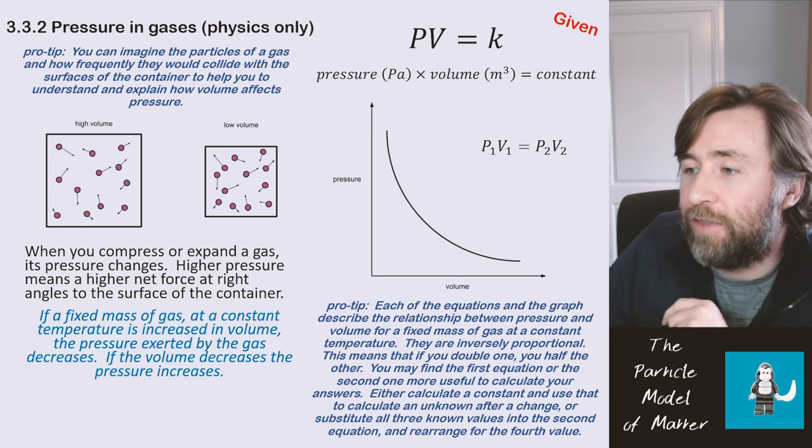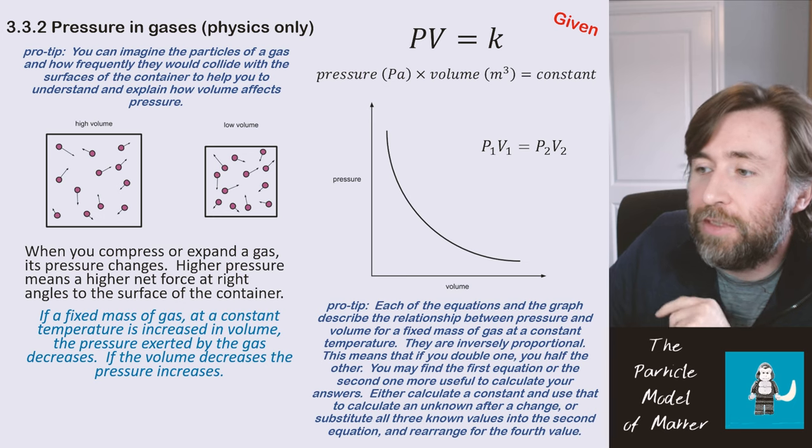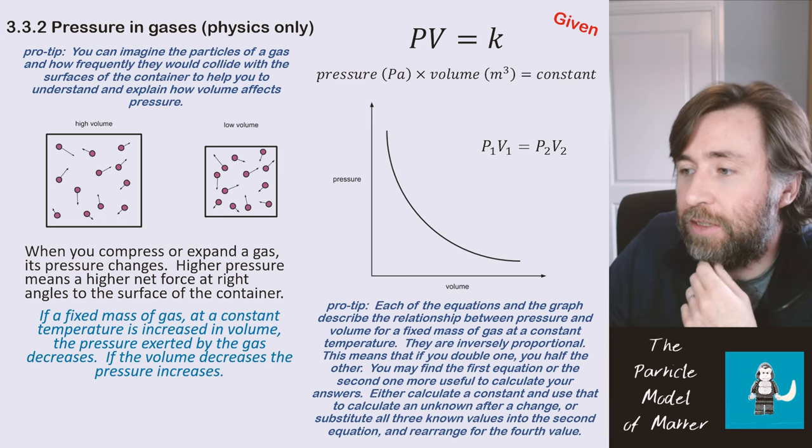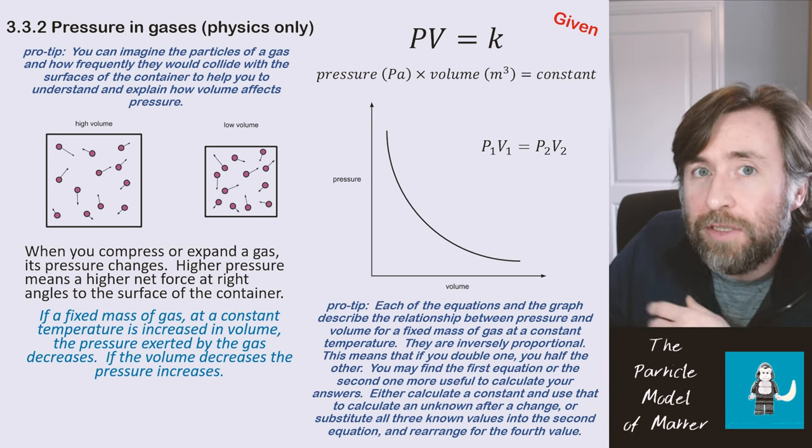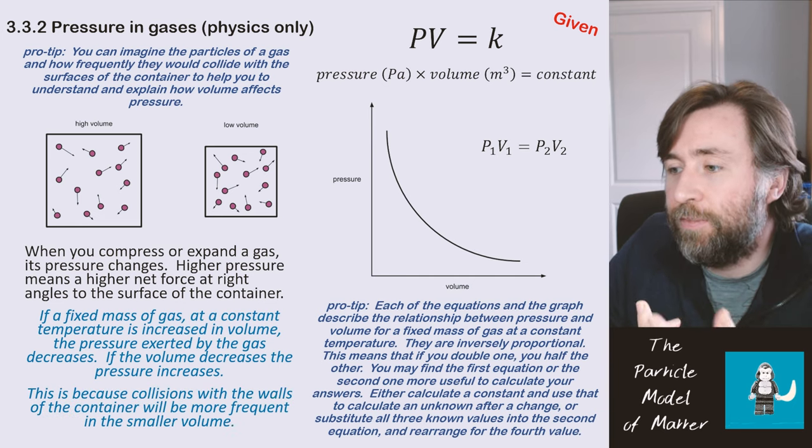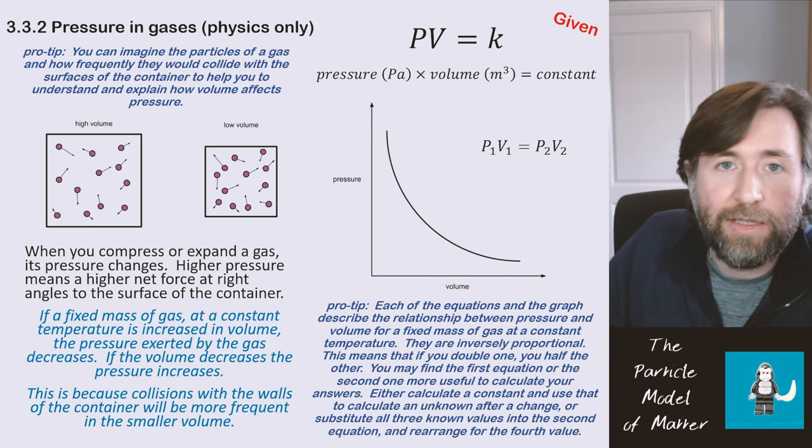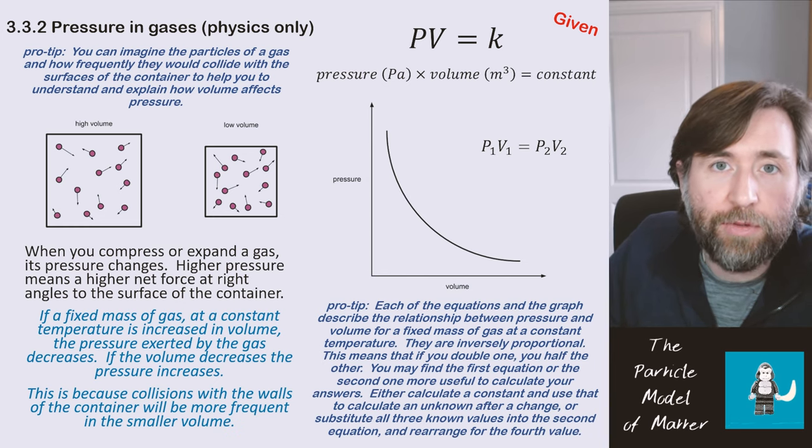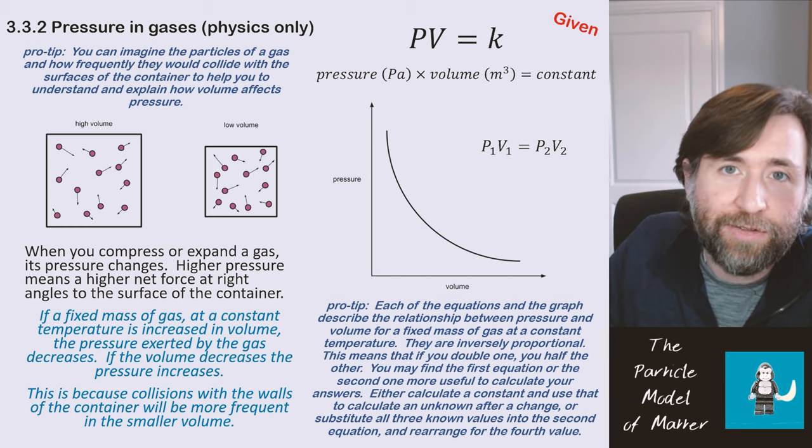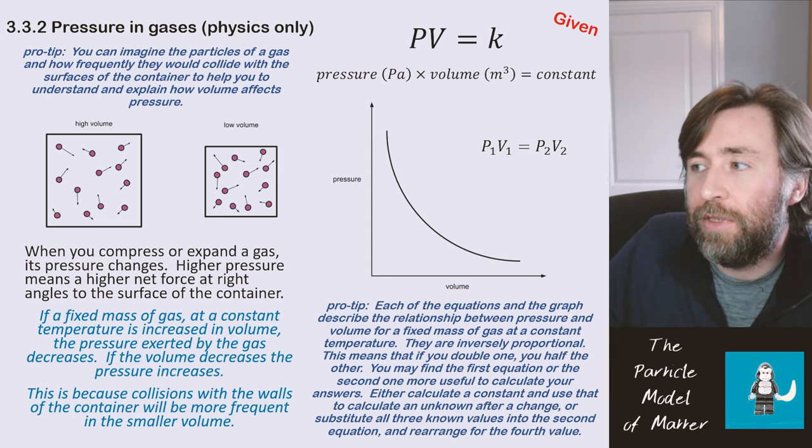For a fixed mass of gas at constant temperature, if you increase the volume, the pressure decreases. If the volume decreases, the pressure increases. This is all about the frequency of particle collisions with the container. There'll be more frequent collisions if the volume is smaller.